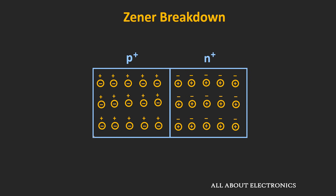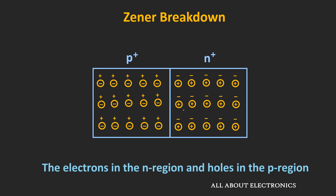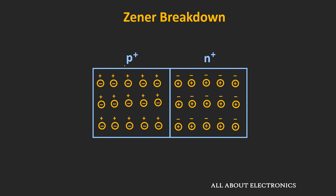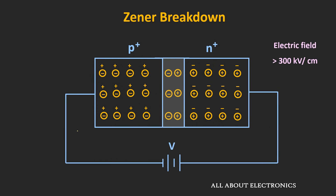Unlike the normal diode, the P and N type regions of these Zener diodes are heavily doped, meaning the number of impurity atoms in the P and N regions will be more, and due to that the number of charge carriers in both regions will be more. Here these two regions are denoted by the symbol P+ and N+ to represent that they are heavily doped. Due to this heavy doping, the width of the depletion region will be much narrower compared to the normal diode, because the diffusing electrons will recombine very close to the junction itself. Also, this small depletion region will have more immobile ions compared to the normal diode.